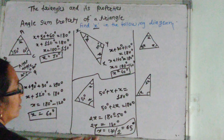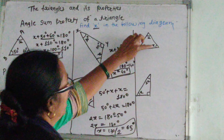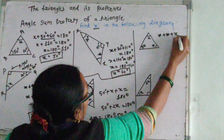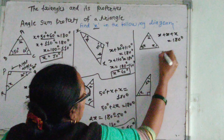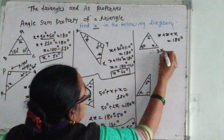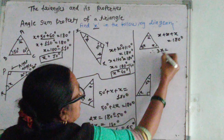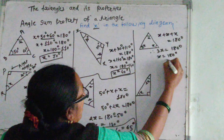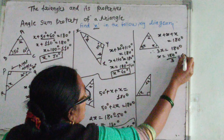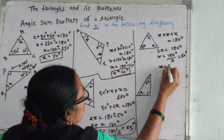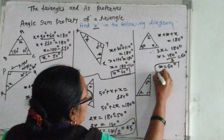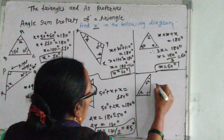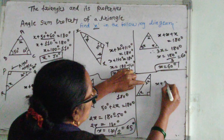Now in this triangle, one angle is 30 degrees and another is 110 degrees. Find X. X plus 30 plus 110 equals 180. X plus 140 equals 180, so X equals 40 degrees.